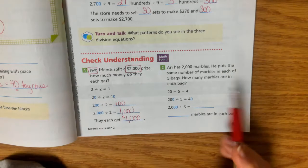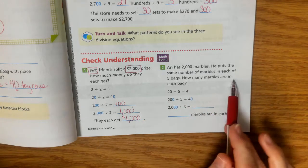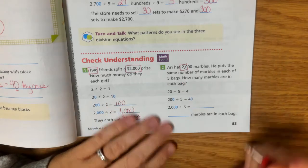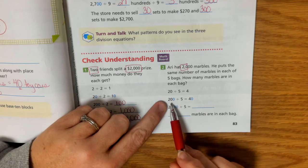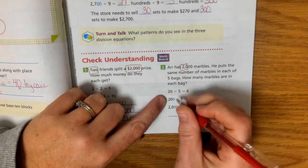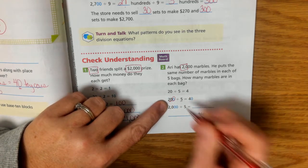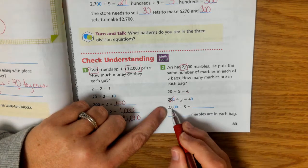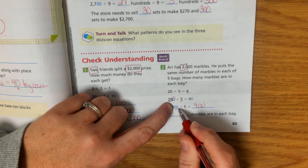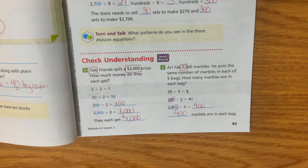Number two, Ari has 2,000 marbles. He puts the same number of marbles in each of five bags. How many marbles are in each bag? Well, we know that 20 divided by 5 equals 4. And 200 divided by 5 equals 40, right? This time you just do the 1, 0, right? Because 20 has something in common with 5, a 4. So 2,000 divided by 5 would be 400. So there are 400 marbles in each bag.